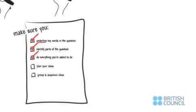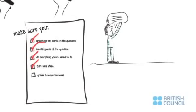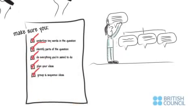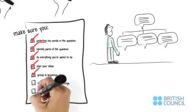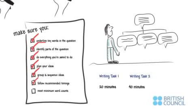Before you write, plan your ideas, though keep them relevant, then group and sequence them. Spending 2-3 minutes doing this can save you time when you are writing. Follow the recommended timings for each task and meet minimum word counts.